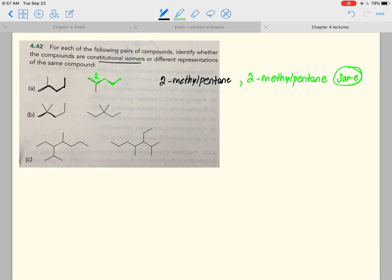This next structure here, let's try to name these. One, two, three, four, five. So this is 2,2-dimethylpentane.